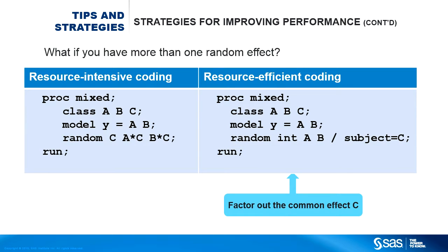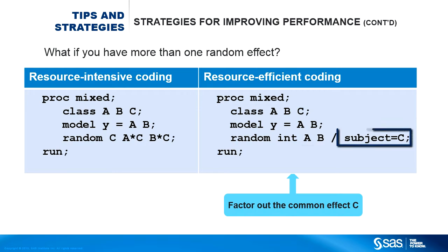Note that in this specification, it seems that A and B are specified as both fixed effects (they appear in the MODEL statement) and random effects (they also appear in the RANDOM statement). But because of the SUBJECT= option in the same RANDOM statement, the real random effects are actually A by C and B by C.